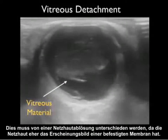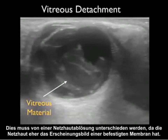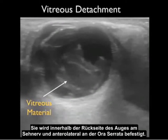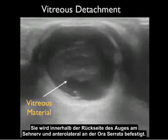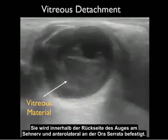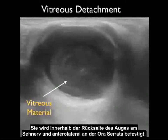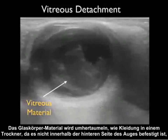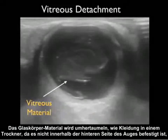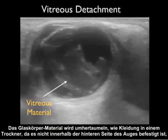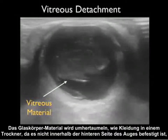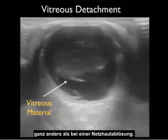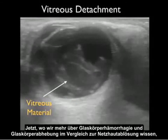This is to be differentiated from a retinal detachment, as the retina will have more of a tethered membrane appearance — attached within the back of the eye at the optic nerve and anteriorly and laterally at the ora serrata. Vitreous material will tumble like clothes within a dryer, as it's not attached within the posterior aspect of the eye — very different than a retinal detachment.